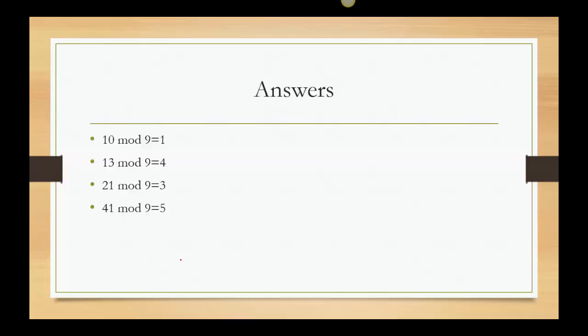All right. So let's look at our answers. Start with 10 mod 9 would be 1. 10 minus 9 is 1. 13 mod 9 is 4. 13 minus 9 is 4. 21 mod 9. Well, now 21 is bigger. So I start thinking about the number 18. So 21 minus 18 is 3. And then 41 mod 9, even bigger. So I'm thinking, well, 9 times 4 is 36. 41 minus 36 is 5. But check this out.